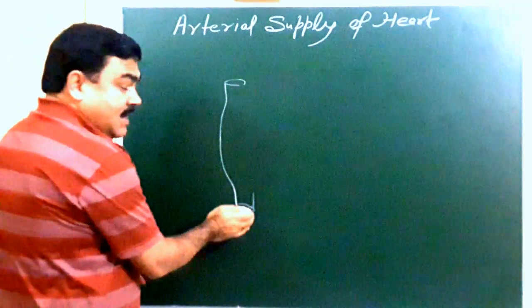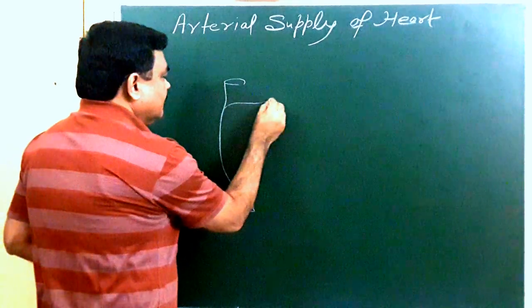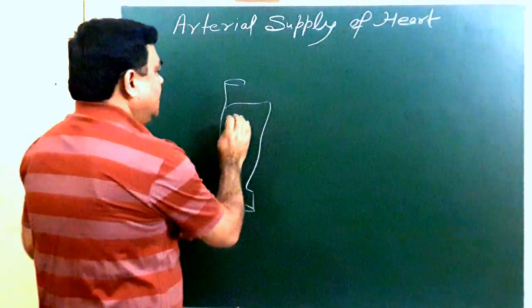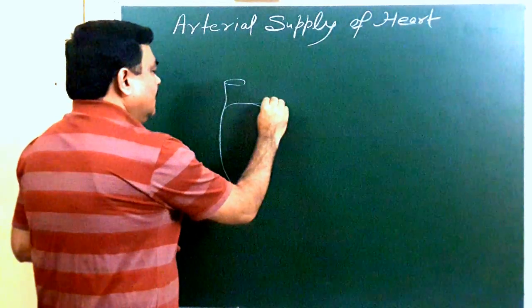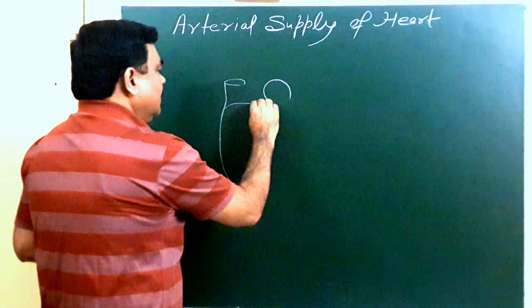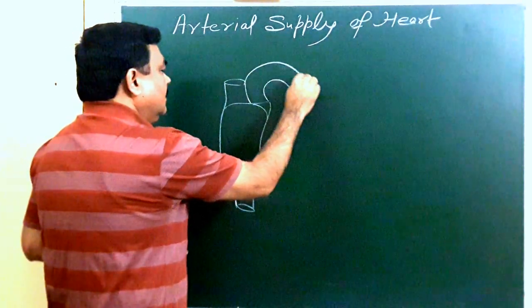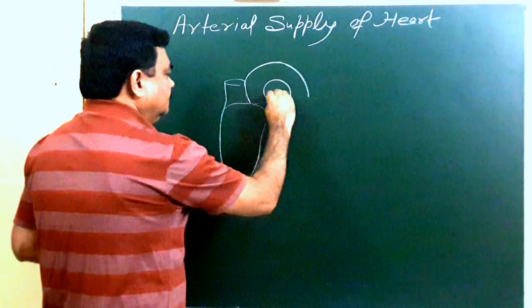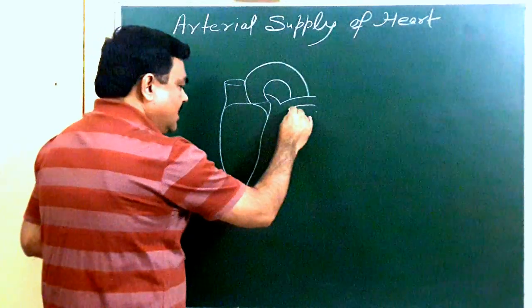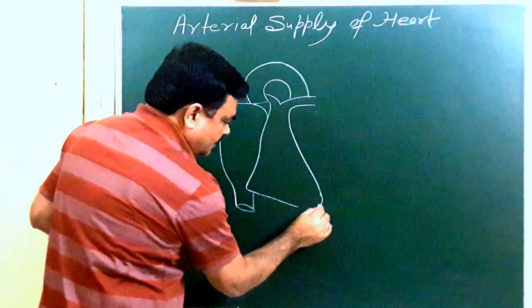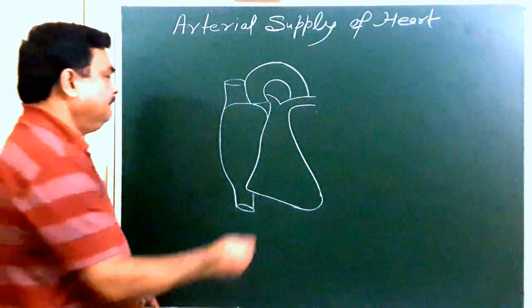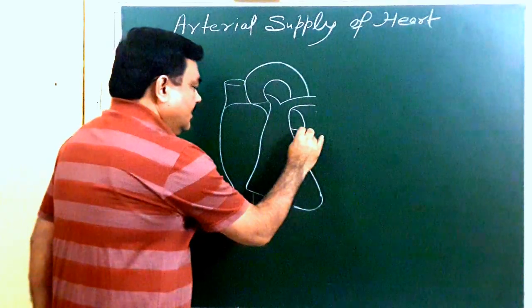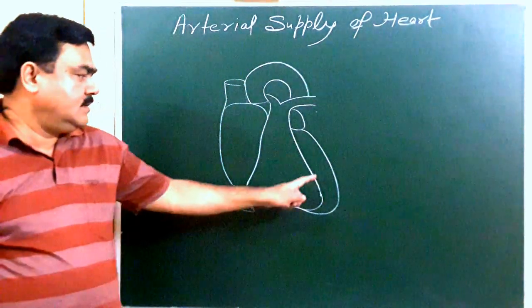In this diagram, this is superior and inferior. This is right atrium, this is right auricle. This is arch of aorta. Here is pulmonary trunk. This is right ventricle. Here is left auricle. Here is left ventricle.